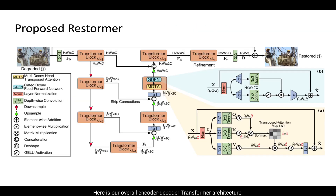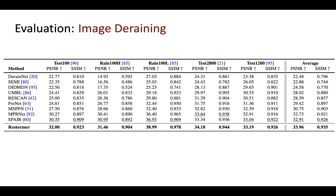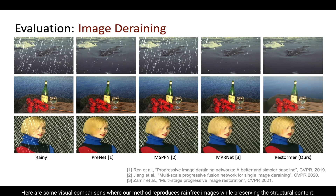Here is our overall encoder-decoder transformer architecture. We perform experiments for various restoration tasks such as image deraining, denoising, and de-blurring. For image deraining, evaluation is performed on five different datasets. When averaged across datasets, our approach obtains a 1 dB PSNR gain over the recent best algorithm, SPAIR. Here are some visual comparisons where our method reproduces rain-free images while preserving structural content.